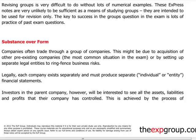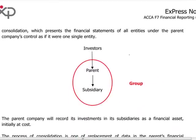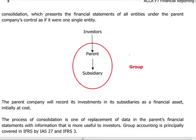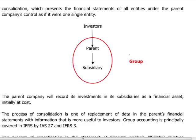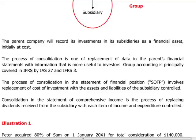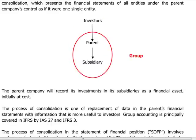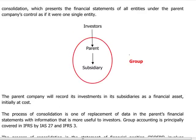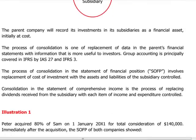Why do we produce group financial statements? We are talking about substance over form. Companies trade via a group structure, with a holding parent and a subsidiary, each producing individual financial statements. However, investors in the holding company want to see the net assets and liabilities of the subsidiary which they effectively control. This is achieved by a process of consolidation — adding up on a line-by-line basis all assets and liabilities of the parent and subsidiary. This is called acquisition accounting and reflects the true nature of the relationship, since the parent controls the net assets of the subsidiary.